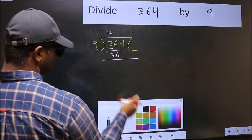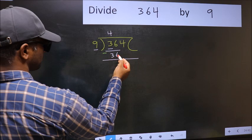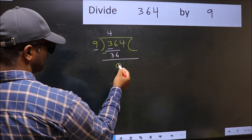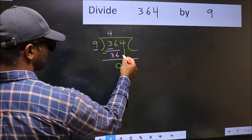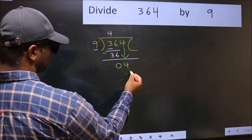Now you should subtract. 36 minus 36 is 0. After this, bring down the beside number. So 4 down.